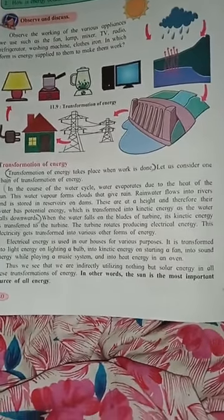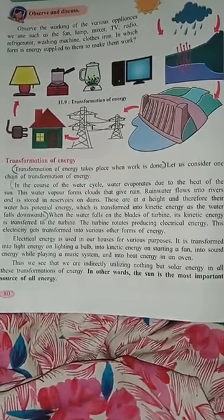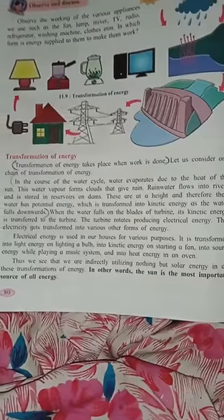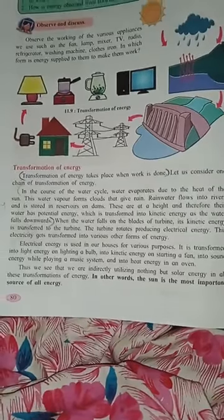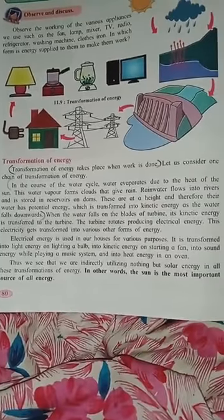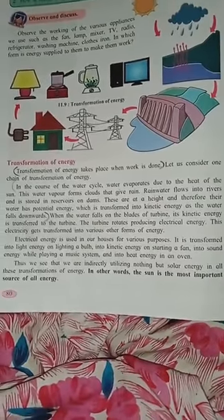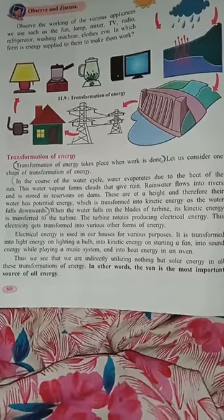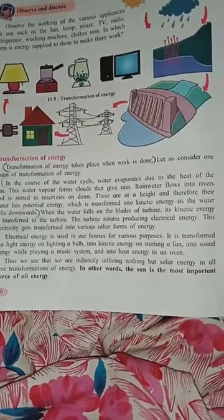These are at a height, therefore the water has potential energy which is transformed into kinetic energy as the water falls downward. When the water falls on the blade of the turbine, the kinetic energy is transferred into the turbine, and the turbine rotates producing electrical energy.